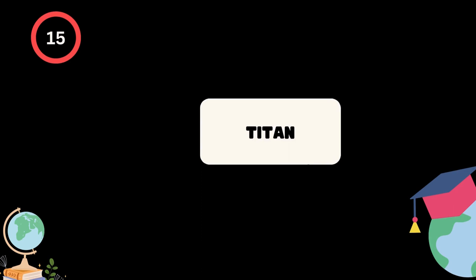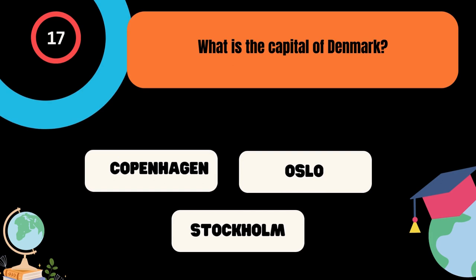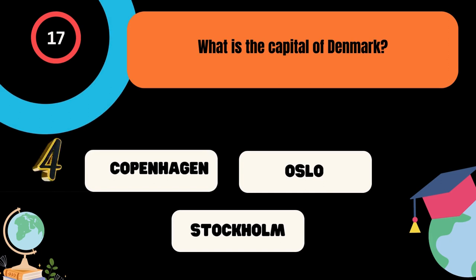Who is known as the father of modern physics? A. Galileo Galilei, B. Isaac Newton, C. Albert Einstein. And the correct answer is Galileo Galilei. What is the capital of Denmark? A. Copenhagen, B. Oslo, C. Stockholm. And the correct answer is Copenhagen.